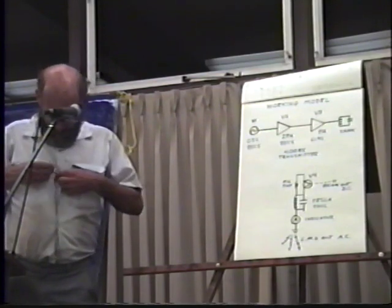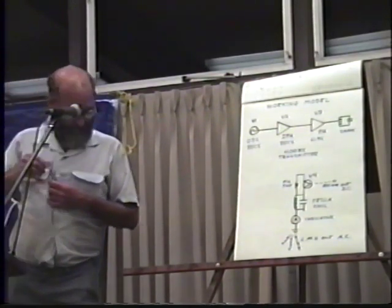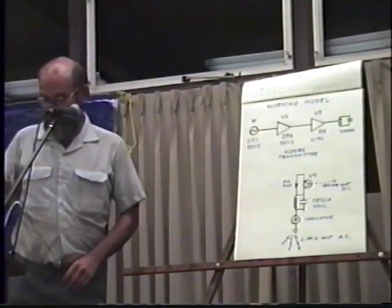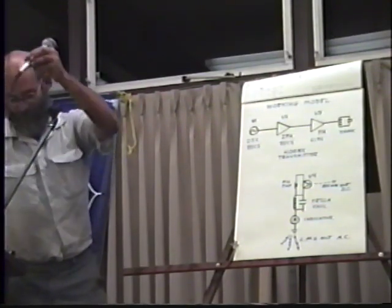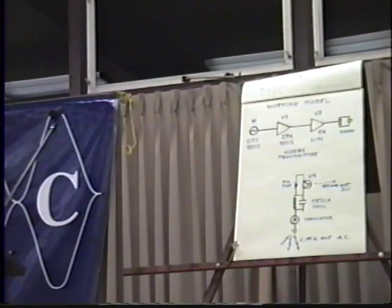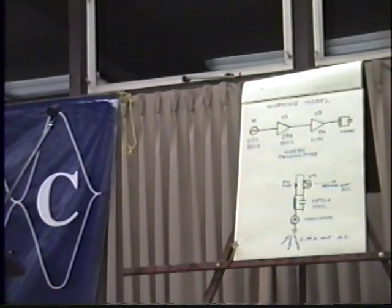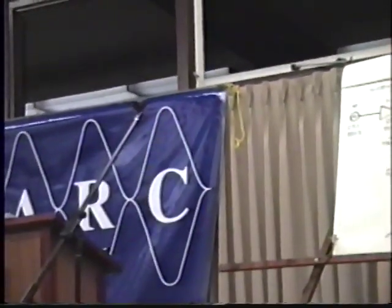I have a model of the Tesla transmission system. What we have here is a number of demonstrations. This is a model of the Tesla transmission system, and the diagram up there shows basically what's happening. Here we have the conventional direct current power supply, and we have a small radio transmitter here — 400 kilocycles, the industrial, scientific, and medical band. Everything is conventional at this point. Here's our antenna, but it doesn't radiate any electromagnetic waves.